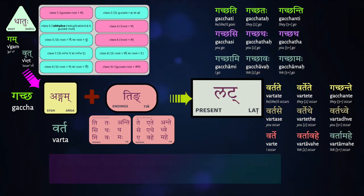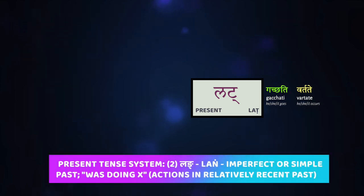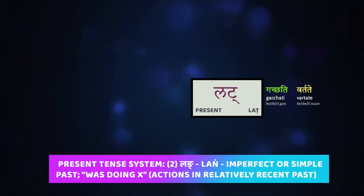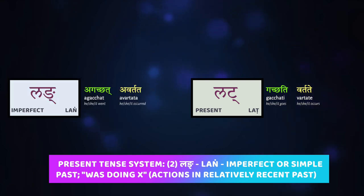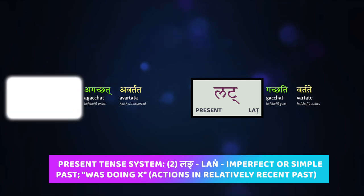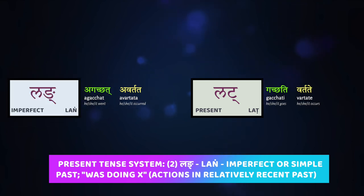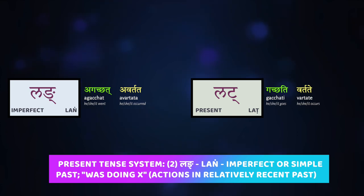Besides the lāt, you're going to find a few other tenses that are part of this present system. There's the simple past tense, also called the imperfect. Pāṇini calls it the lāṅ, and we're going to be learning about the lāṅ probably in our next set of videos.